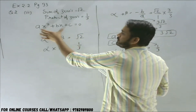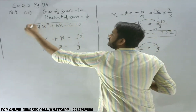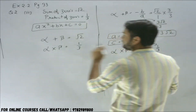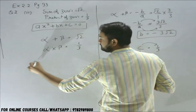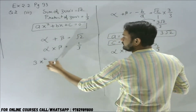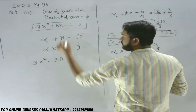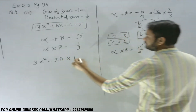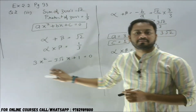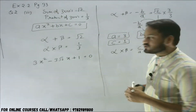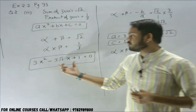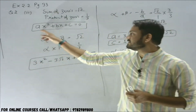Substituting these values into the standard equation: a is 3, so 3x squared; b is minus 3 root 2, so minus 3 root 2 times x; and c is 1, so plus 1 equals 0. Therefore, the quadratic polynomial is 3x squared minus 3 root 2 x plus 1. This is how we find the quadratic polynomial using the given sum and product of zeros.